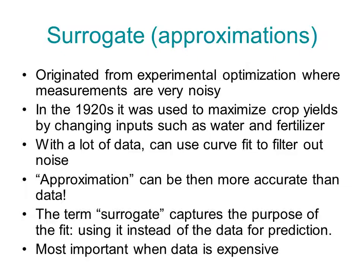With a lot of data, you can use the curve fit to filter out the noise, but a lot of times you cannot afford to do that. When you are able to do that, the approximation can be more accurate than the data, and therefore it may not be a good idea to call it an approximation. So the term surrogate captures the purpose of the fit—it's more neutral. You use it instead of the data because the data may be expensive or you may have to wait.